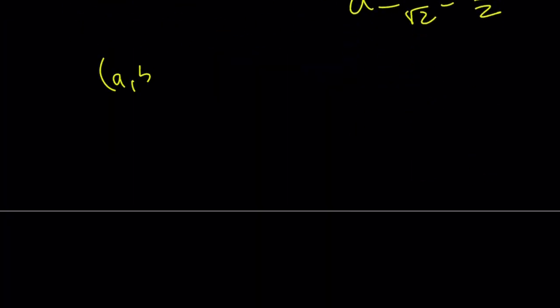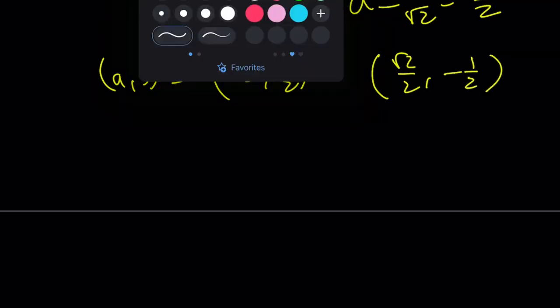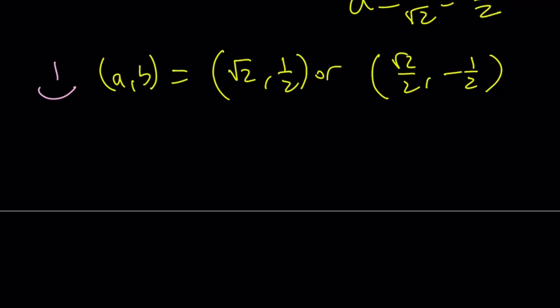We can write a, b as square root of 2, 1 half, or square root of 2 over 2, negative 1 half. And this brings us to the end of this video. Thank you for watching. I hope you enjoyed it. Please let me know. Don't forget to comment, like, and subscribe. I'll see you tomorrow with another video. Until then, be safe, take care, and bye-bye.